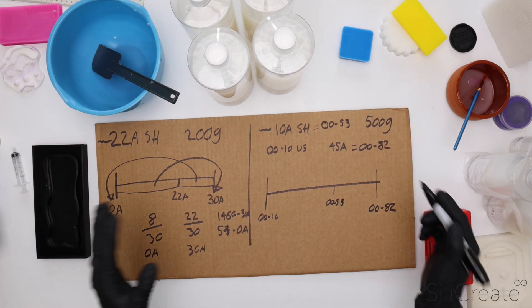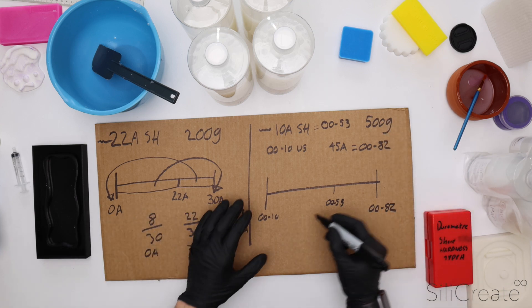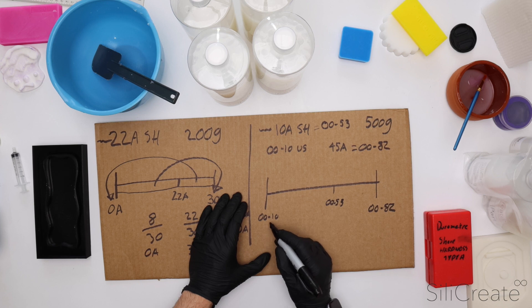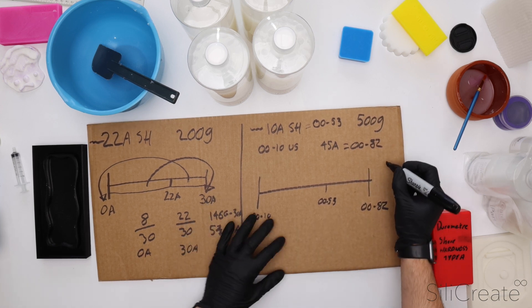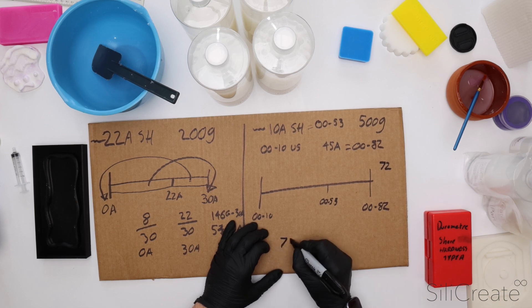Now we do the fun maths. We know we want 500 grams. This is our range. We know our range, our total range here is 72. And so that'll be our denominator for both.